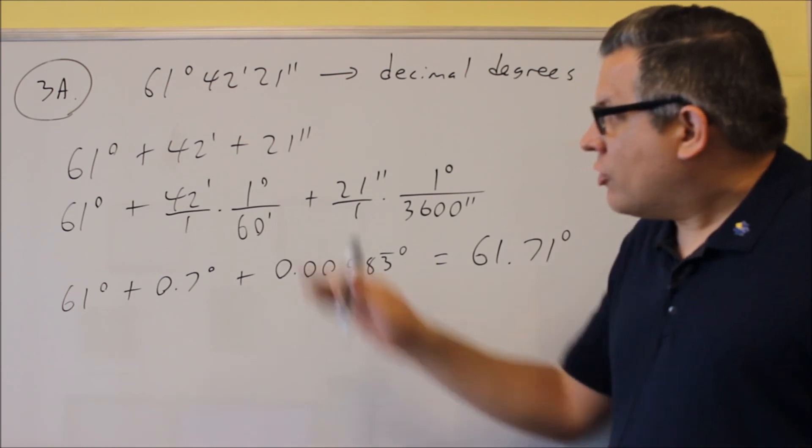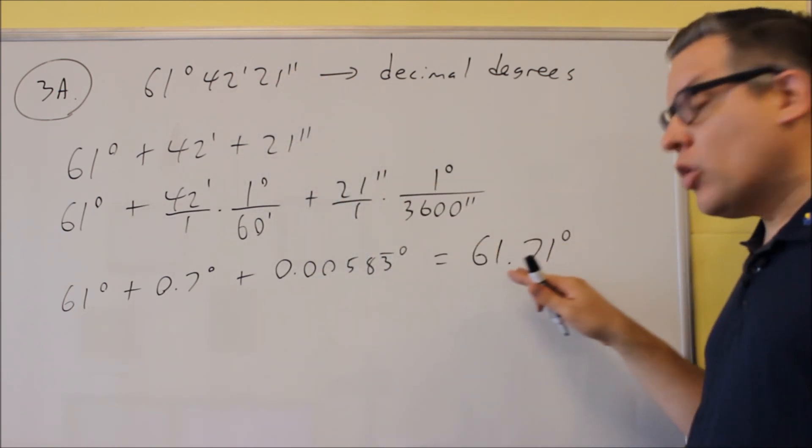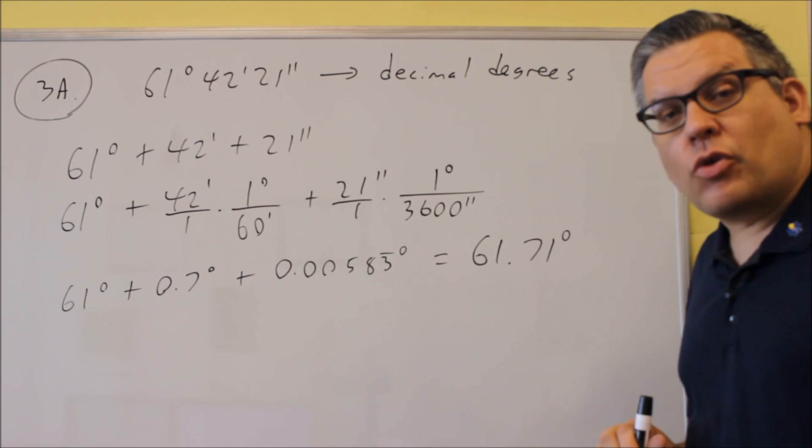So degrees, minutes, seconds — it would be the equivalent of 61.71 degrees.